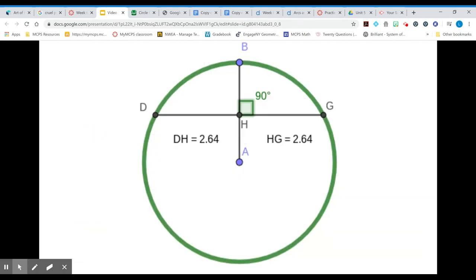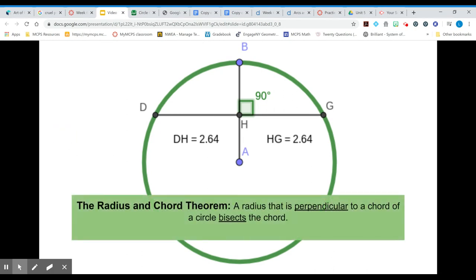The next thing we need to understand for this module is that if we have a chord on a circle and we have a radius that is perpendicular to it, that radius bisects the chord. You can see that both of these segments are the same length and we're now going to prove that. This is known as the radius and chord theorem.